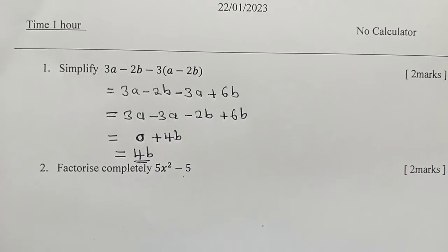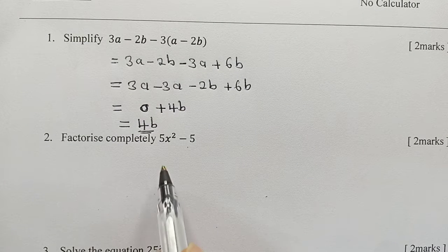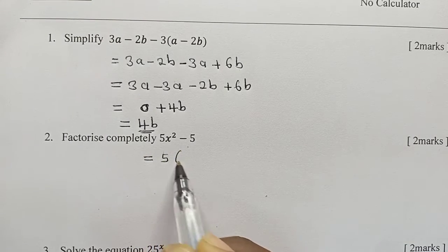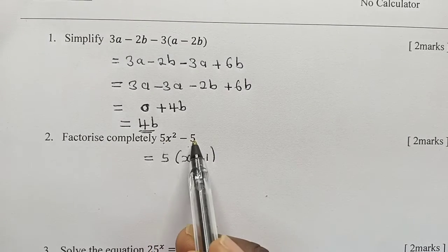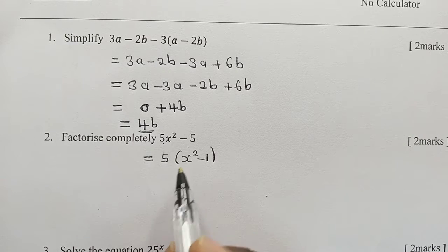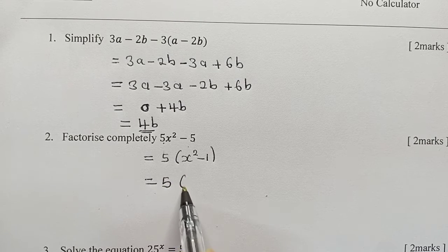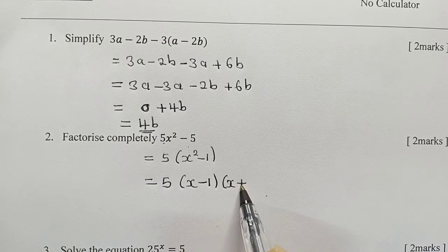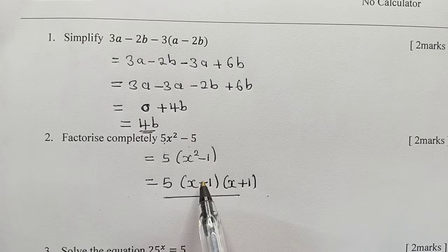We go to the next question. We need to factorize completely. We shall say 5 open bracket X squared minus 1, because 5 is a common factor. Next, we say equal to 5(X minus 1)(X plus 1). This is our solution — we used the difference of two squares.